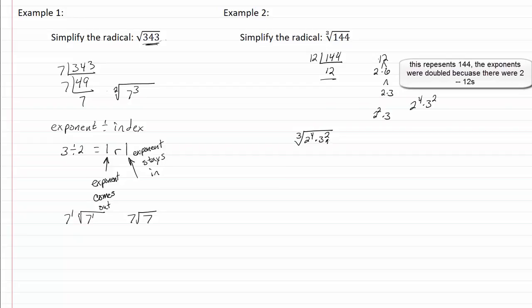So we have the cubic root of two to the fourth times three squared. Well, two is less than three so we don't even have to do anything with that. That's just going to stay inside. But four is larger than three so we're going to take four divided by three. That's going to give us one with remainder of one. Remember this goes out, this stays in.